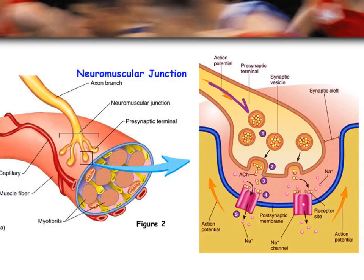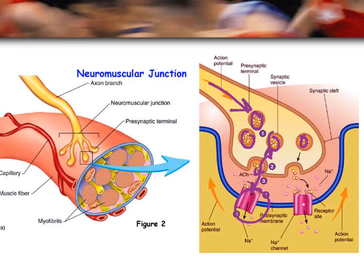The nerve impulse comes down and triggers the synaptic vesicle to fuse with the neurolemma of the motor neuron at the synaptic end bulb. That releases the neurotransmitter acetylcholine into the synaptic cleft. It travels across and binds with the receptors on the motor end plate, causing sodium to enter. That carries the nerve impulse generated by the axonal terminal of the nerve down the muscle, causing a muscle contraction.